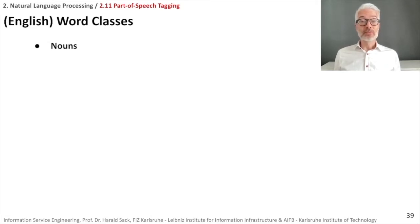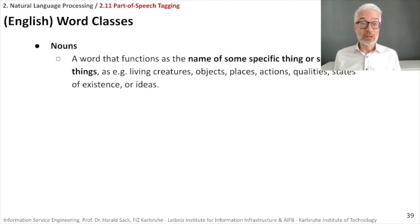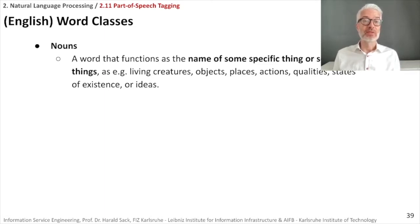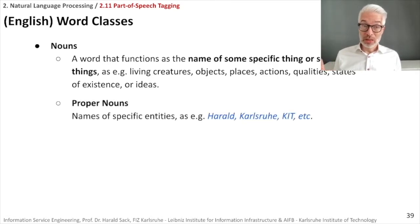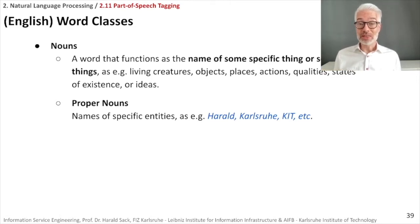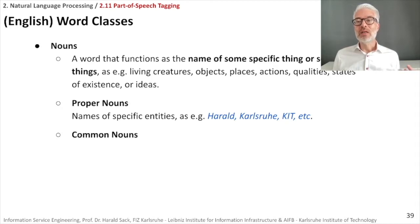Let's have a look at a few sample word classes — we are talking about the English language here. A noun is a word that functions as the name of something specific or a set of things, such as living creatures, objects, places, actions, qualities, and so on. We distinguish between proper nouns, which are names of specific entities — like Harald, or Karlsruhe, or KIT — and common nouns, which refer to a class of entities, like city, planet, person, corporation.